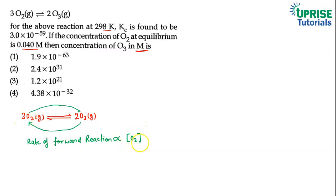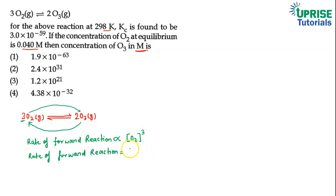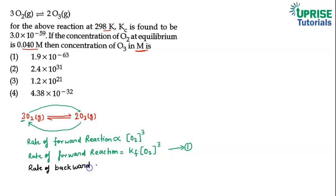So here, for the oxygen concentration, the power will be 3. And if there are 2 moles, then we use power 2. We can write: rate of forward reaction = kf × [O₂]³. We will call this Equation 1.